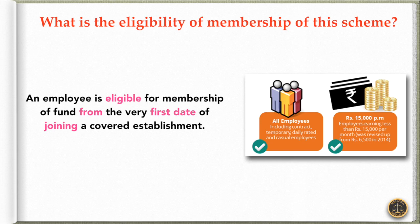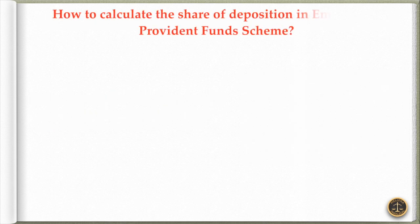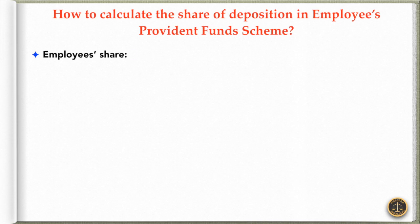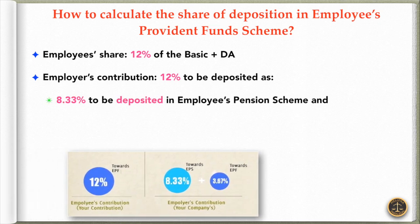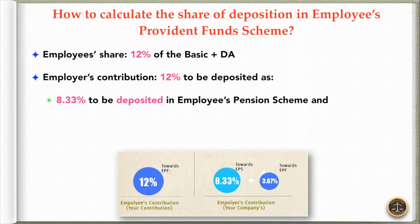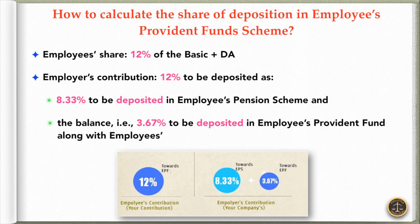Now, the next question is: how to calculate the share of deposits in the Employees Provident Fund Scheme? Following are the typical methods to calculate the share of deposition. Employee's share: 12% of the basic plus DA. Employer's contribution: 12%, to be deposited as 8.33% into the pension fund and the balance of 3.67% to be deposited in the Employees Provident Fund along with the employee's share of 12%.